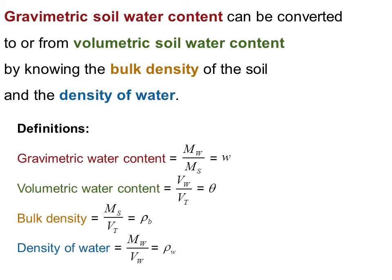So to really quickly define all these terms, the gravimetric water content is the ratio of the mass of water in soil to the mass of soil solids, and that's usually denoted by the letter W.